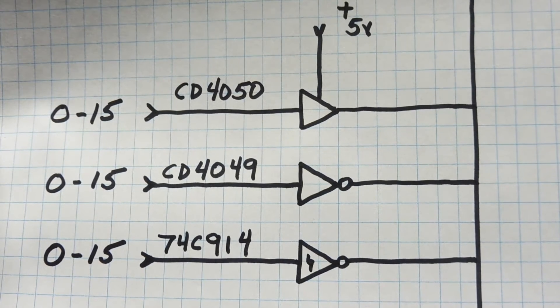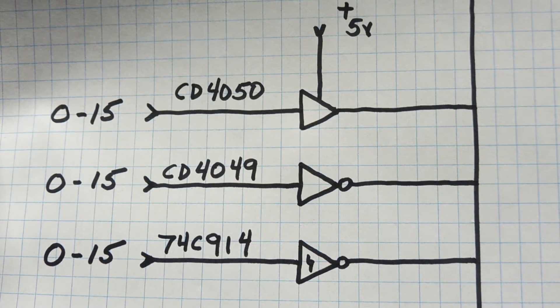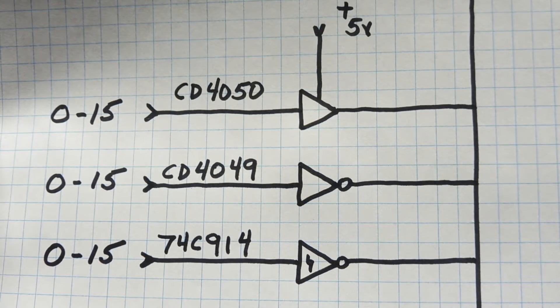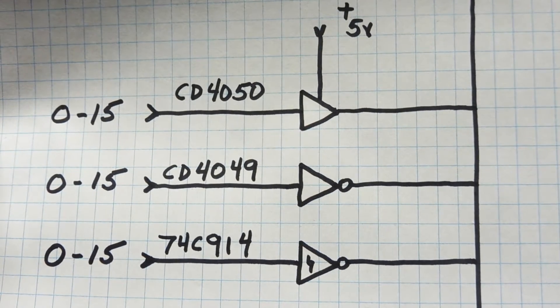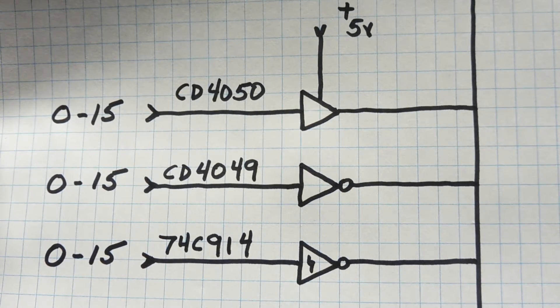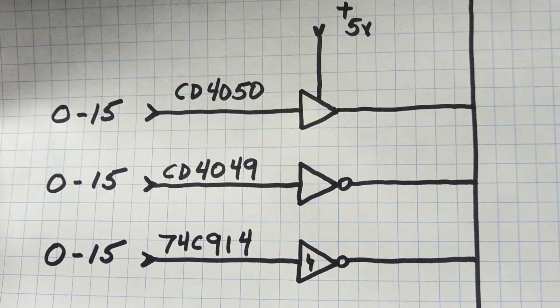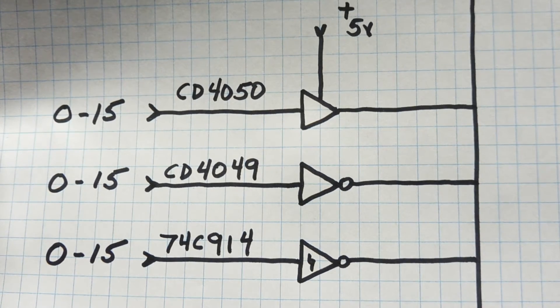The second one is an inverter, the CD4049. So 15 volts in will have 0 volts out. The last one is a 74C914, a Schmidt trigger inverter. It has a higher trigger threshold on the input for noisy inputs and slow moving inputs. That's my favorite, that's the one I use the most. The 74C914 is a good one to stock in your parts bin.